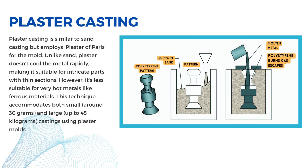Plaster casting is like sand casting, but it uses a mixture called plaster of Paris for the mold. Plaster doesn't cool the metal as quickly as sand, which is good for making precise parts with thin sections. However, it's not ideal for really hot metals like ferrous materials. This method can make both small castings, around 30 grams, and large ones, up to 45 kilograms, using plaster molds.